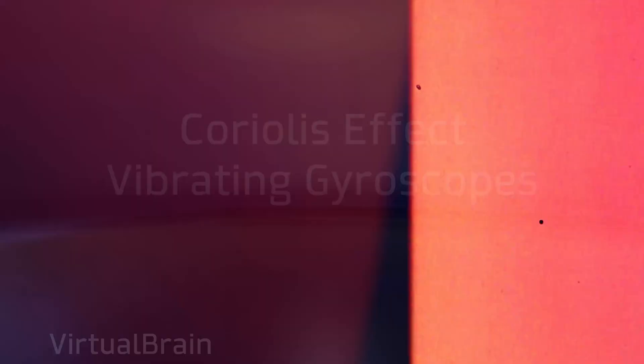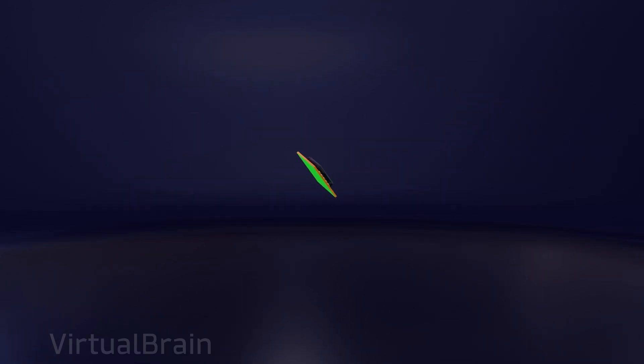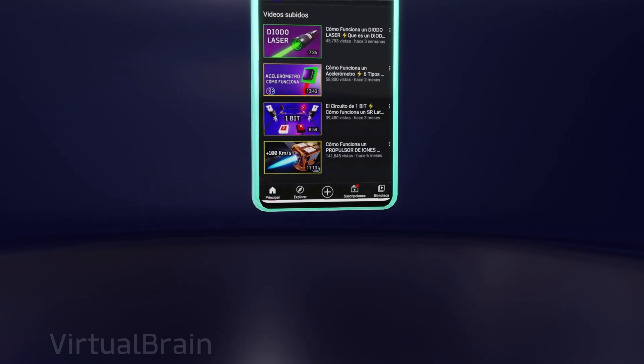The next type of gyroscope we will discuss is the Coriolis Effect Vibrating Gyroscope. This type of gyroscope is one of the most widely used nowadays, as they can be manufactured in really small sizes at a low cost, and therefore can be integrated into all kinds of electronic devices, such as your phones.